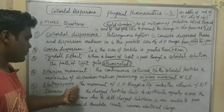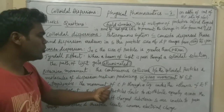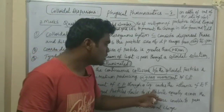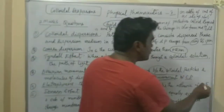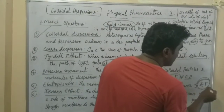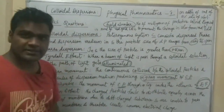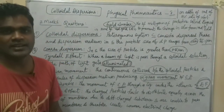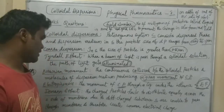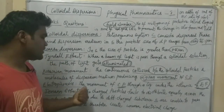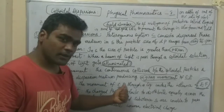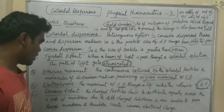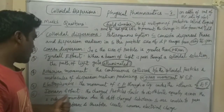Next is electrophoresis. It is defined as the movement of colloidal particles through a liquid under the influence of an electrical field. The electrical field maintains charges like positive and negative, which produce current. The movement of colloidal particles under this influence is called as electrophoresis.